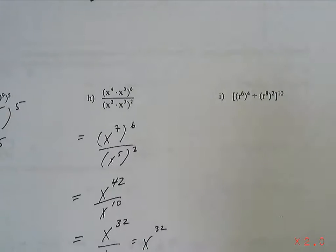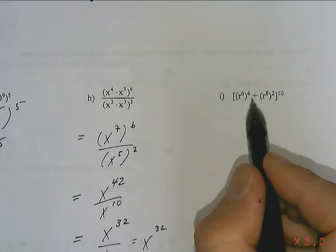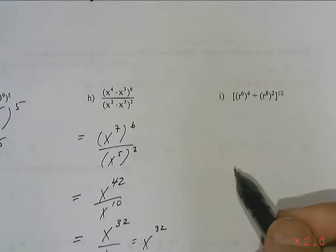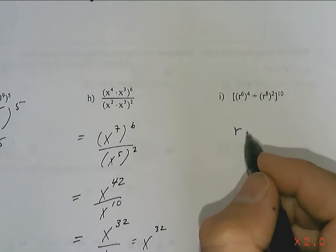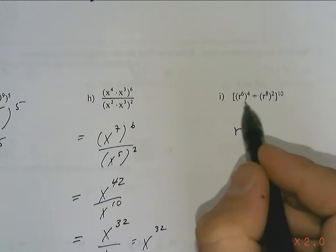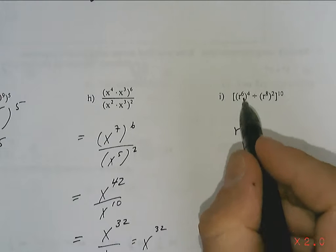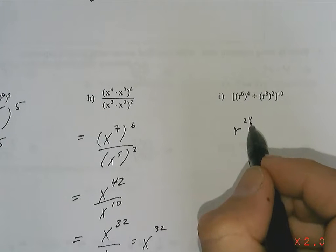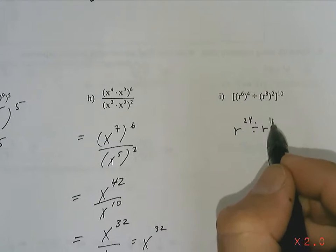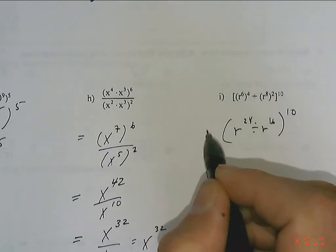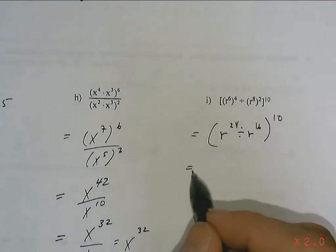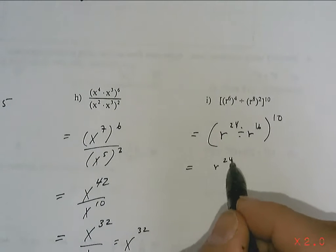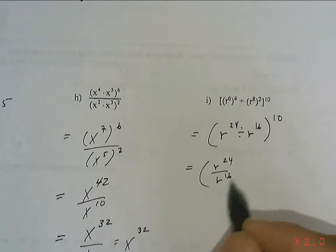So, moving over to the next one. I've got R to the 6 to the 4 divided by R to the 8 to the 2 all to the 10. Oh, my goodness. Well, that's going to be R 24 divided by R to the 16 all to the 10. So, I'm slowing it down and doing it in steps. So, that's going to be R to the 24 over R to the 16 to the 10.